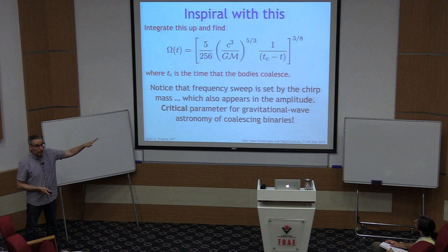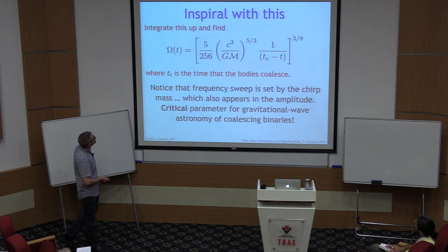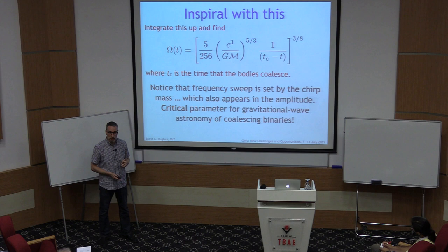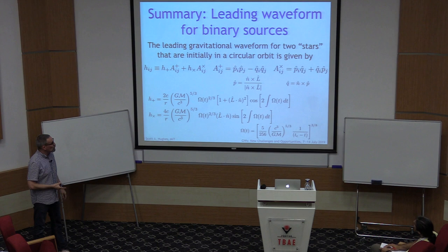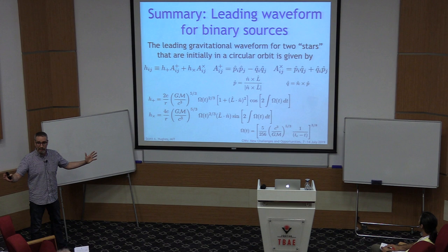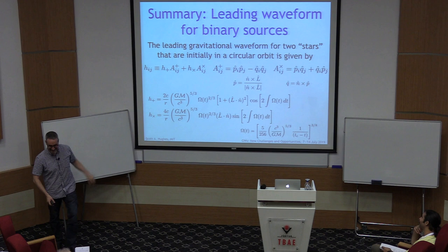Integrating d-omega/dt gives a simple law characterizing how the orbital frequency evolves as a function of time. This is the leading-order solution describing the evolution of a binary in general relativity due to gravitational wave emission. If you want the leading solution describing the behavior of binary systems under gravitational radiation, it's all in this one slide — these will be posted.